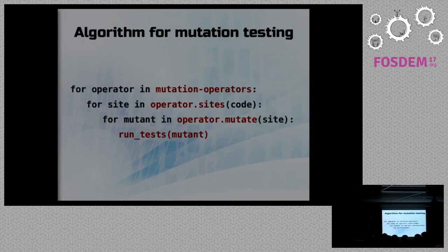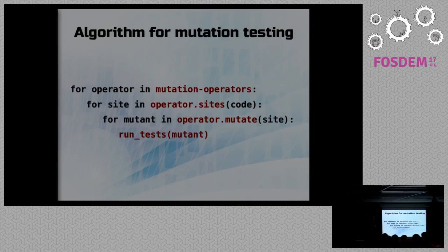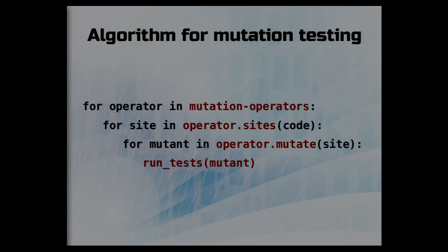The algorithm for mutation testing is actually very simple — we run three loops, one after the other. First, we go through all mutation operators that our particular tool supports — things the tool knows how to change. Then for each operator, we find the places in source code where that operator is used and replace it with something else. Most operators can lead to only one other type of mutation, but sometimes you can produce different mutations for one place in the code, like with comparison operators. Then of course, you execute the test suite.